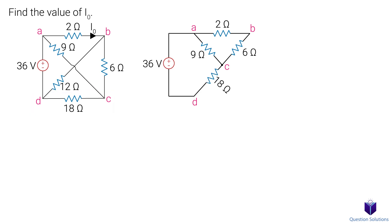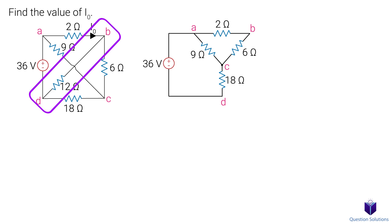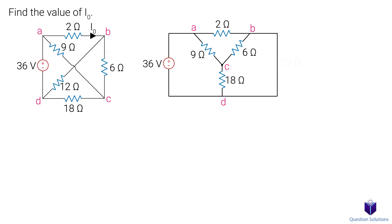Now we can draw it like this, but that doesn't really look nice, so I'm going to draw it straight down while extending the wires towards the center. The last wire we need to account for is the connection between D and B. There is a 12-ohm resistor on that conductor, so let's draw it. And that's our circuit redrawn.